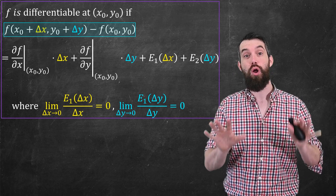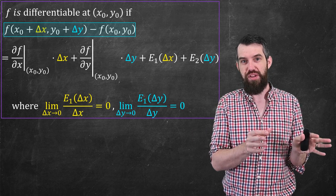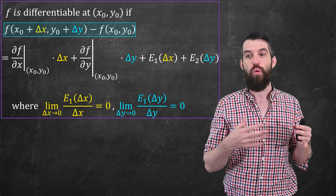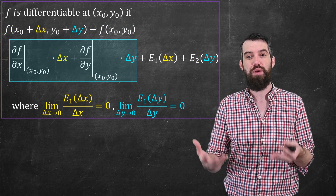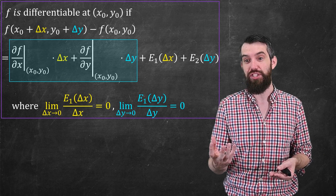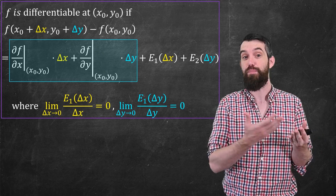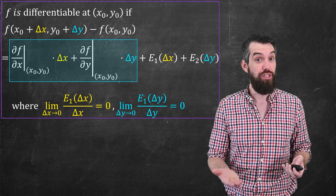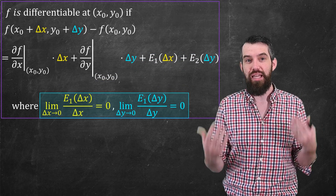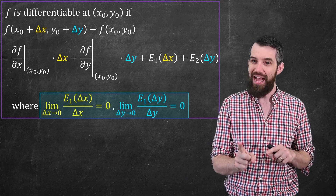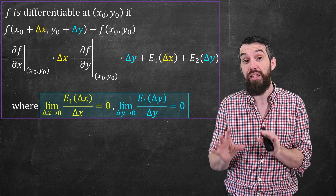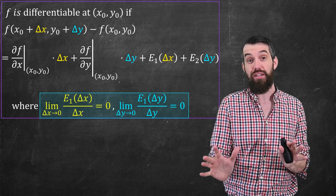Let's walk through the definition one more time. The difference between the function at x0 plus delta x, y0 plus delta y and at x0, y0 can be approximated by two expressions: the partial derivative with respect to x times delta x, representing contributions from changing x, plus the partial derivative with respect to y times delta y, representing contributions from changing y. These are approximations with two error terms — one from x, one from y — but these error terms are small in the sense that even when you divide out by delta x or delta y, which are themselves going to zero, the limits still go to zero. If you have that, you have differentiability.